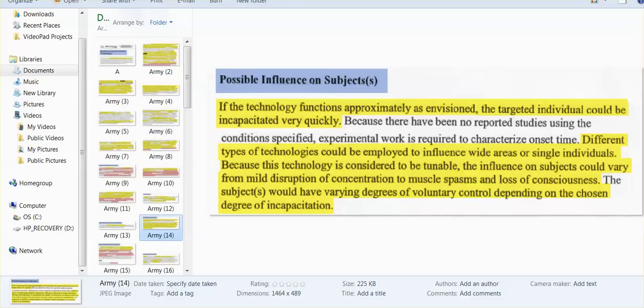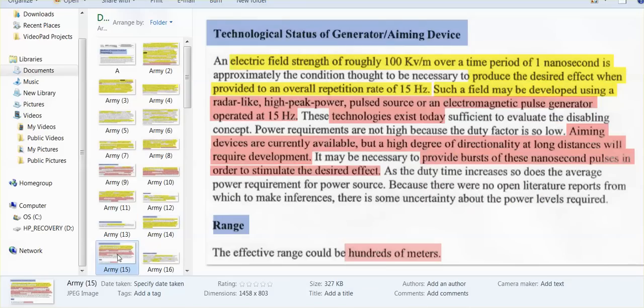The targeted individual could be incapacitated very quickly and they can either produce a seizure or their desired effects are wide-ranging. They can influence on subjects mild disruption of concentration to muscle spasms to loss of consciousness, depending on the degree of incapacitation they want will then require a certain frequency aimed at entire regions or individuals, the targeted individual. Why do they use that term, targeted individual? Our military, it's a term that our military uses.